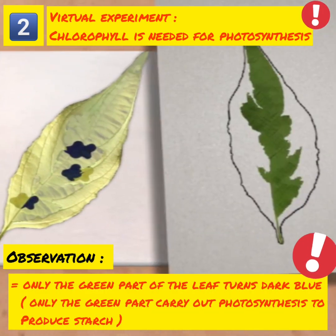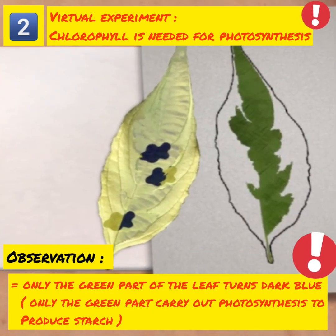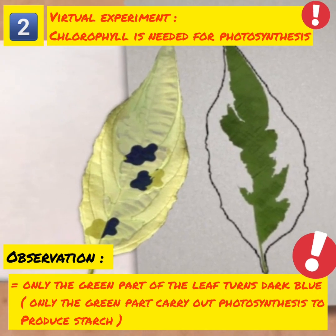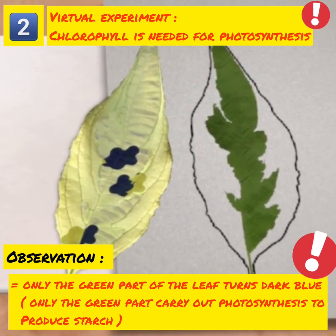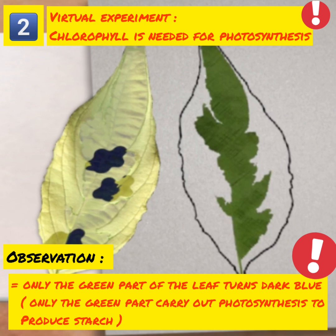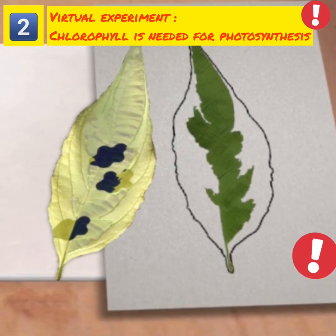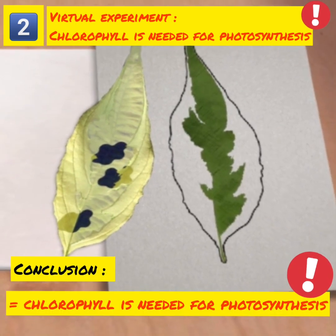Only the green parts of the leaf turn blue-black when a few drops of iodine solution are added. This shows that only the green parts of the leaf carry out photosynthesis to produce starch. So, chlorophyll is needed for photosynthesis.